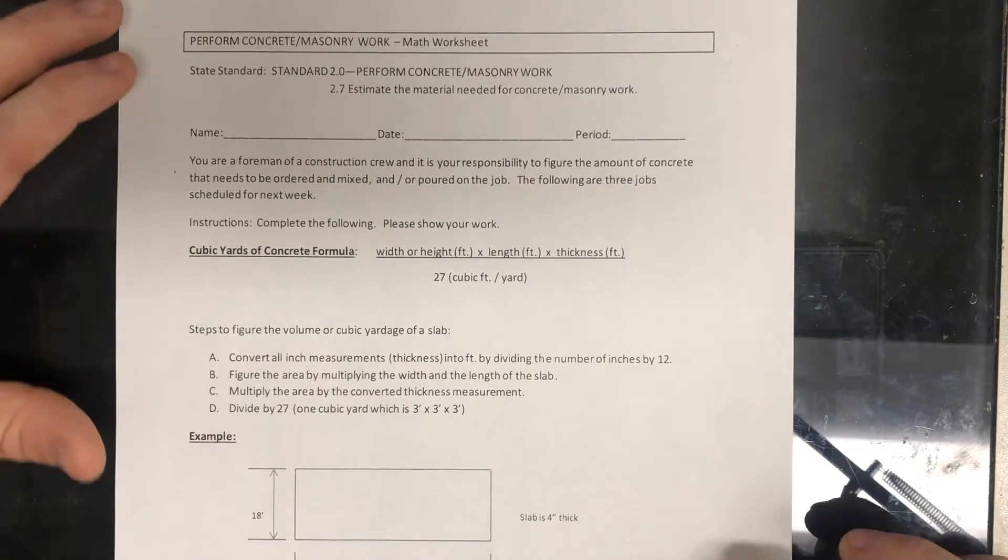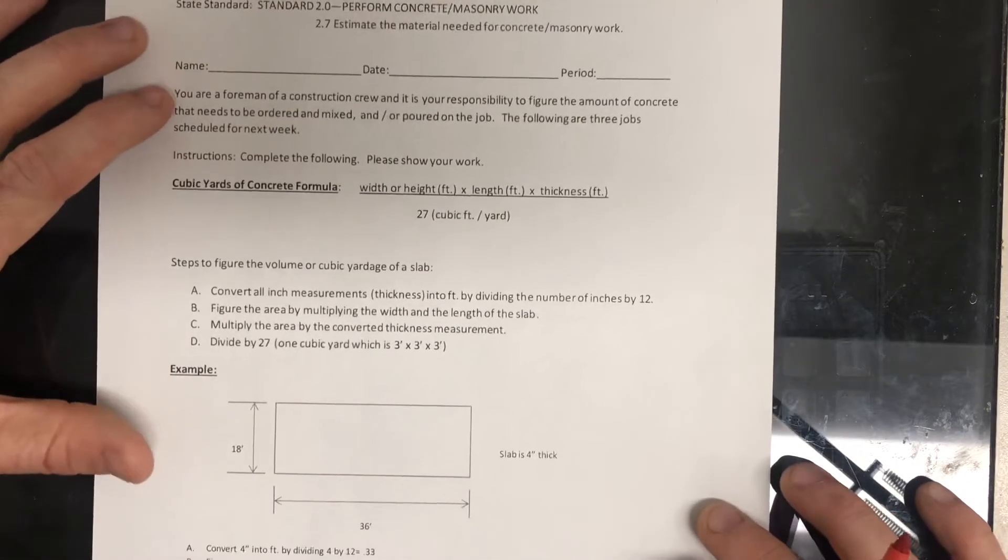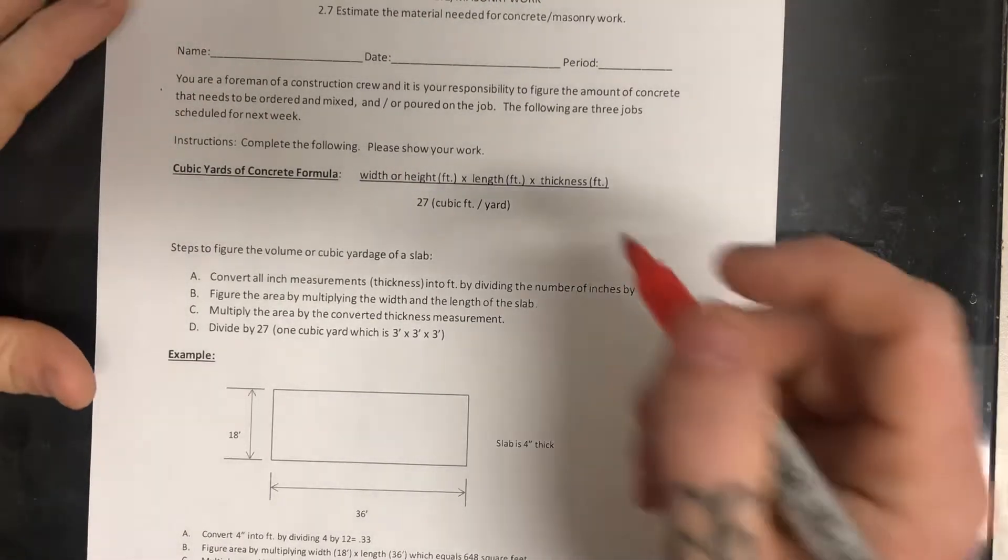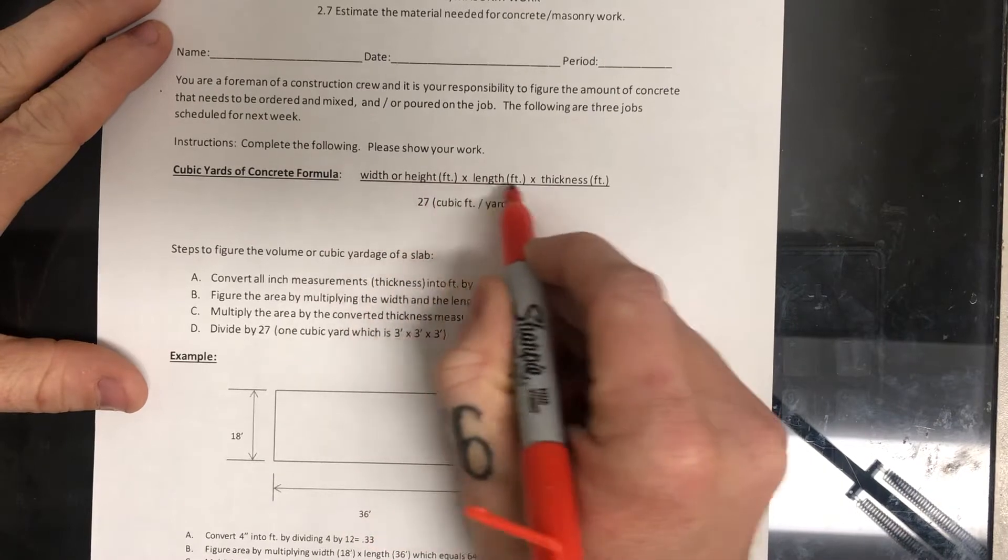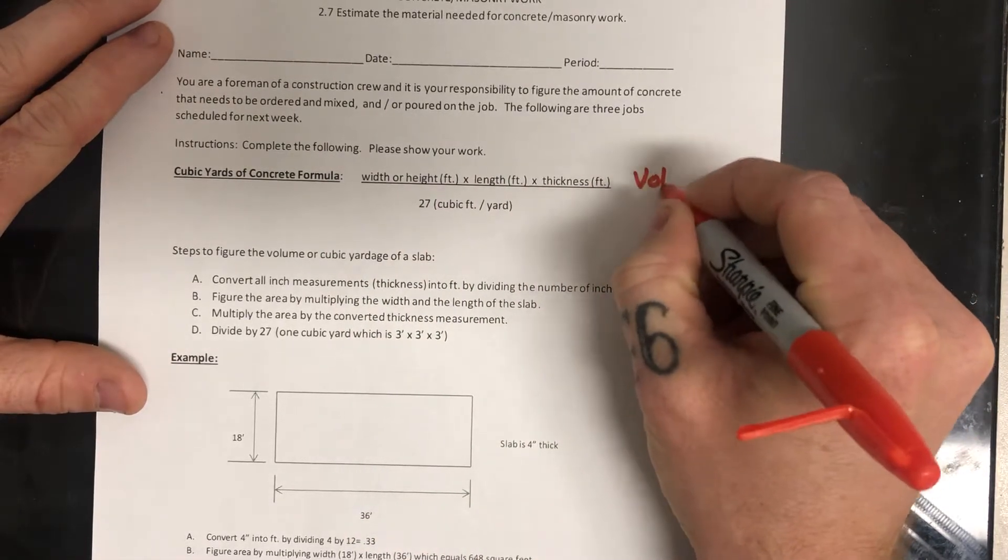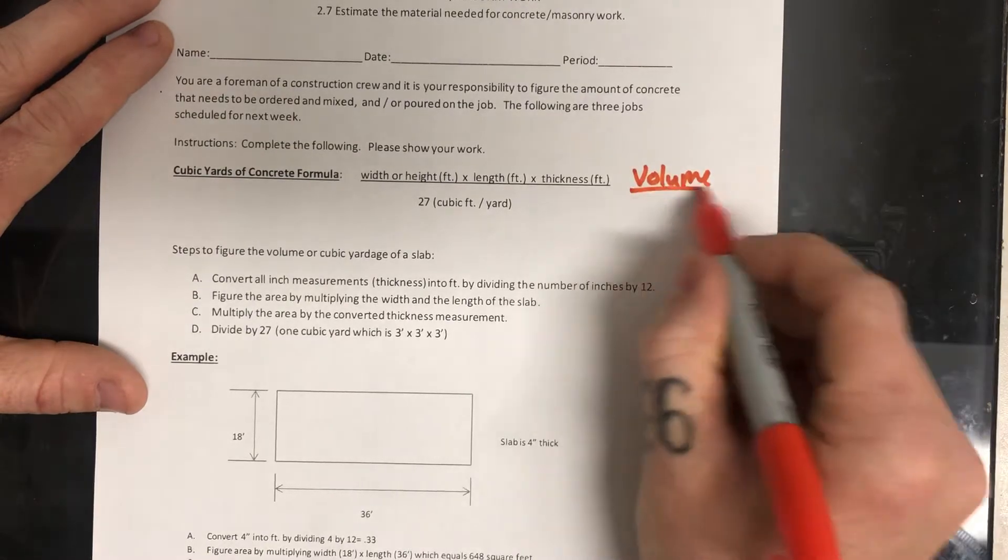So I'm going to walk us through some examples. First of all, concrete is ordered in cubic yards. So we'll talk about that for a little bit. You're going to find the width, the length, and then the thickness of the slab. So basically, you're going to find what we call the volume of the slab and divide it by 27.